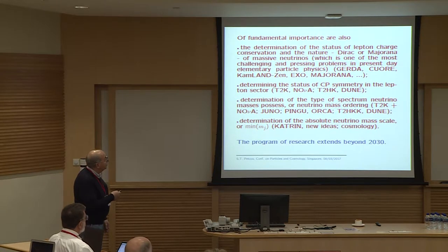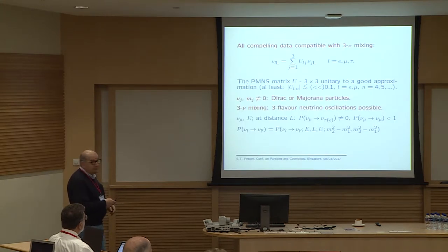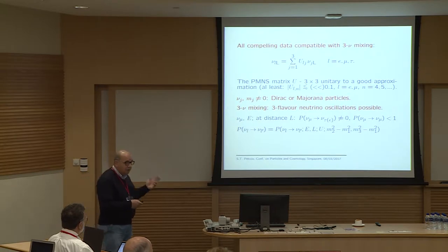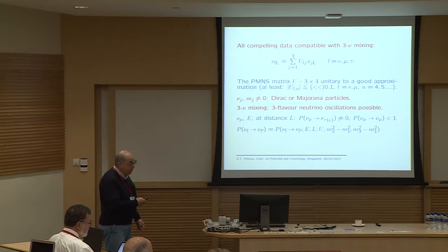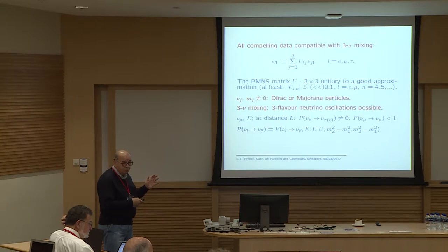From solar, atmospheric, accelerator, and reactor experiments, we have obtained compelling evidence for neutrino oscillations — transitions in flight between different flavor neutrinos. All compelling neutrino oscillation data can be explained within a very simple three-neutrino mixing scheme.